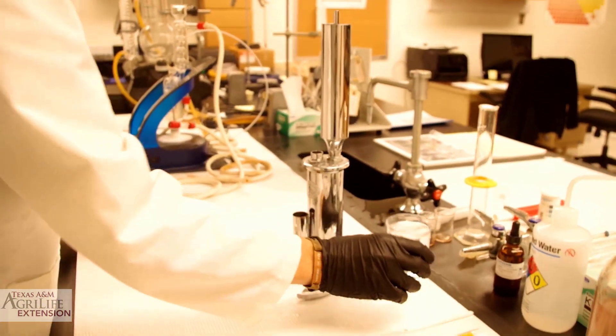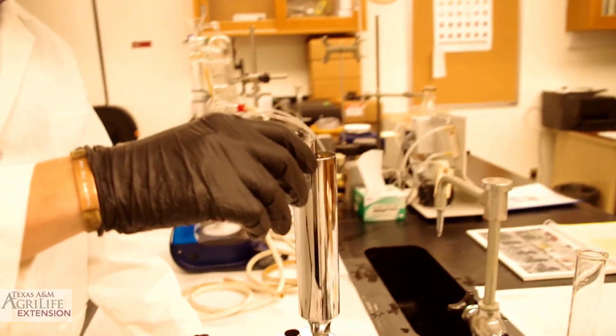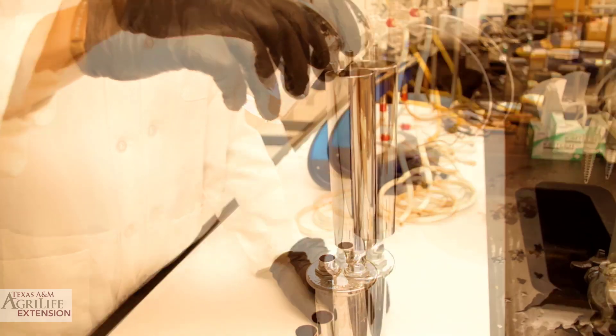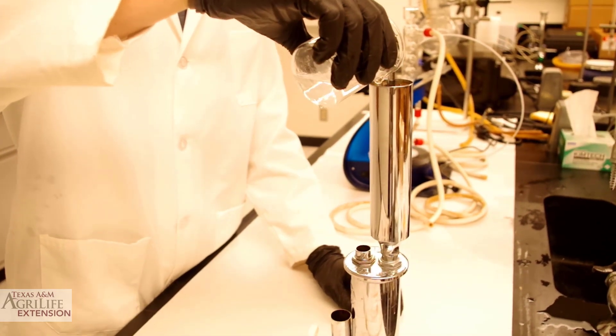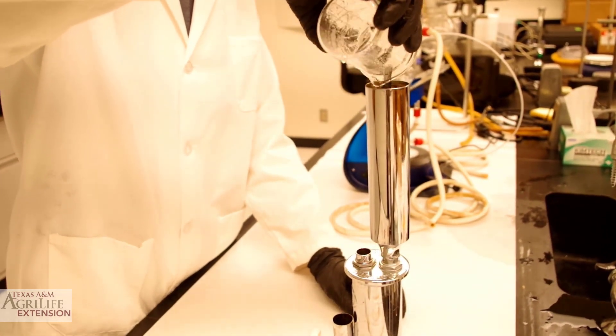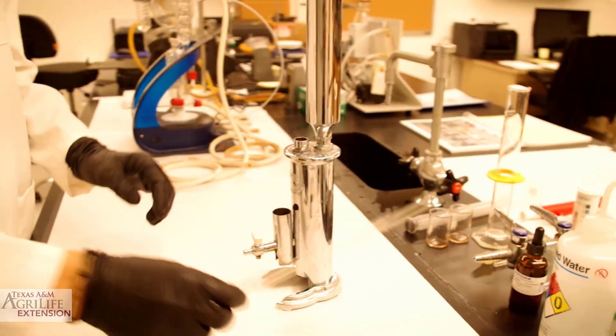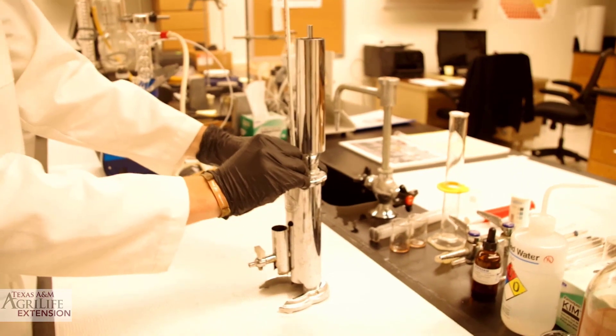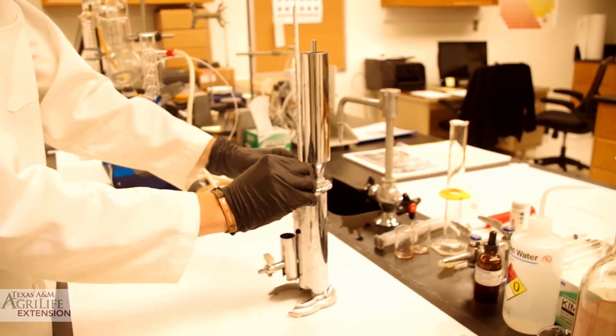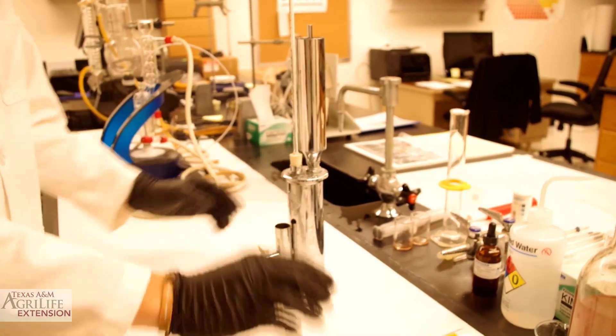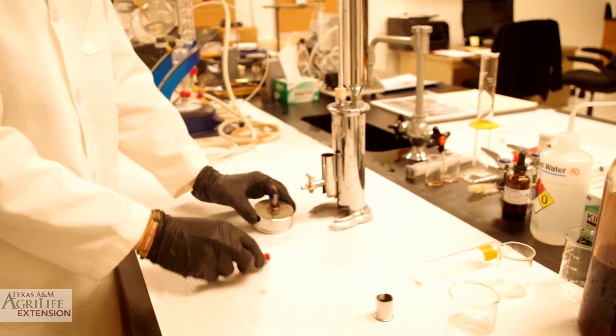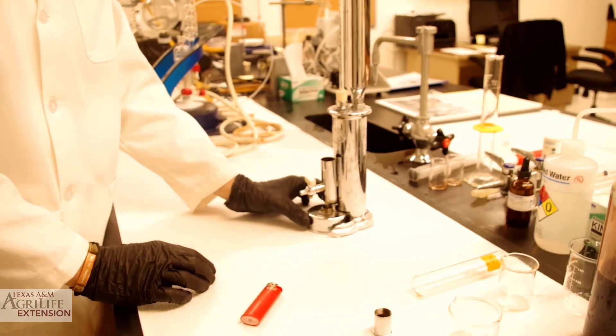We now add cold water to our cooling chamber. Make sure you fill it all the way to the top. Now place the thermometer on top of the boiling chamber. Light up your burner and place it underneath the boiling chamber.